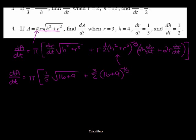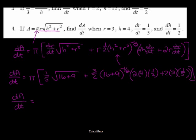Just plugging in we get dA/dt equals π times one fifth times √(16 + 9) plus three halves. The square root of 16 plus 9 would be in the denominator and then times 2 times 4 times one half plus 2 times 3 times one fifth.